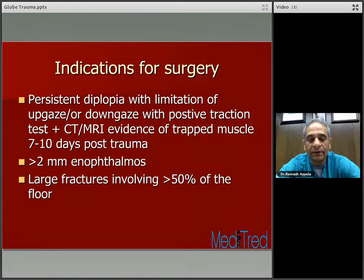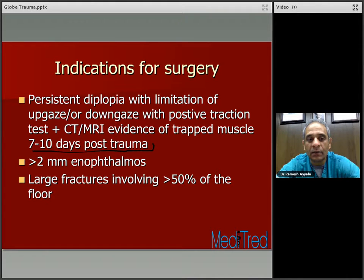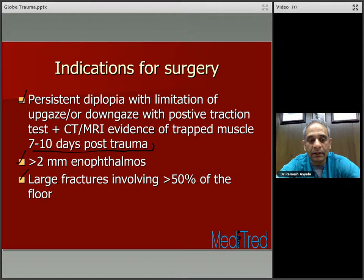Indications for surgery after initial treatment in an adult: persistent diplopia with limitation of up gaze or down gaze with a positive traction test, plus CT/MRI evidence of trapped muscle seven to ten days post trauma, is the number one indication. Also, patients with more than two millimeters of enophthalmos and large fractures involving greater than 50% of the orbital floor. All three are indications for taking the patient to the OR and repairing the floor fractures. You should listen to the oculoplasty lectures by Dr. Dora Raj to gain more knowledge on surgical techniques used for orbital floor fracture repair.